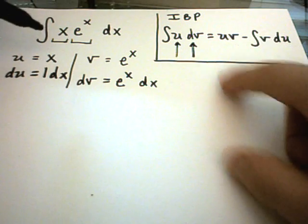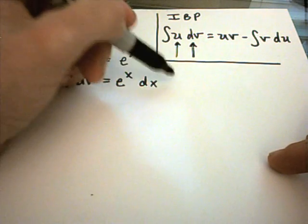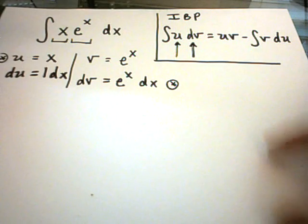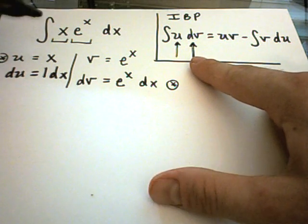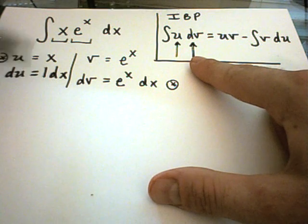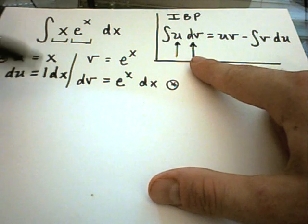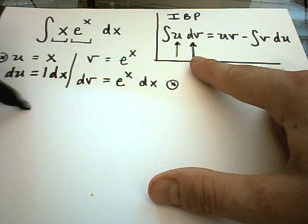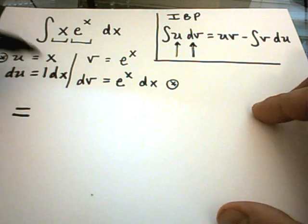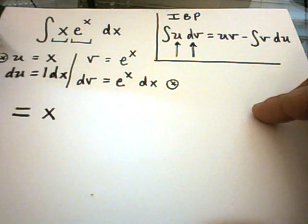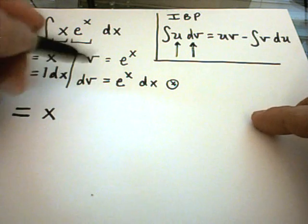So I've now picked u and dv in my problem. I've used the left side of this equation and rewrote this as udv. Now I'm going to rewrite it using the right side of the equation. You take whatever u is, in this case x, and multiply that by v,